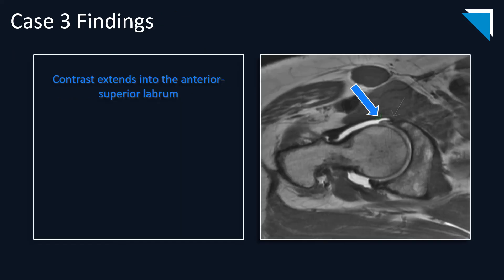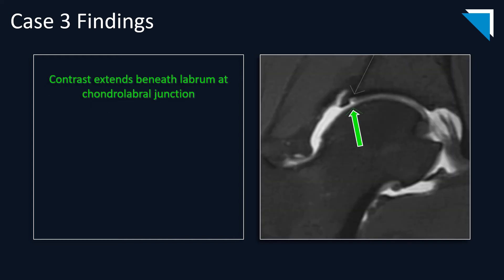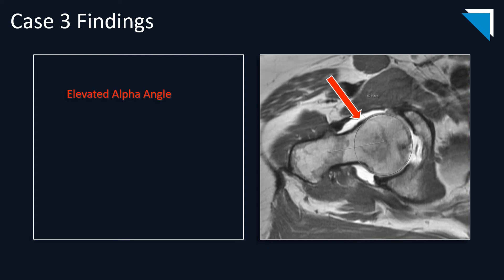Case three is a patient who came in with right-sided hip pain. On this coronal image, there is contrast extending into an enlarged and somewhat globular anterior labrum. On the sagittal T1 fat-saturated image, contrast extends into the anterior superior labrum. On the coronal small field-of-view T1 fat-saturated image, contrast extends deep to the labrum at the chondrolabral junction, indicating labral detachment. A cortical bump within the anterior lateral femoral head — a pistol grip deformity — is also present, with an elevated alpha angle of 61 degrees.